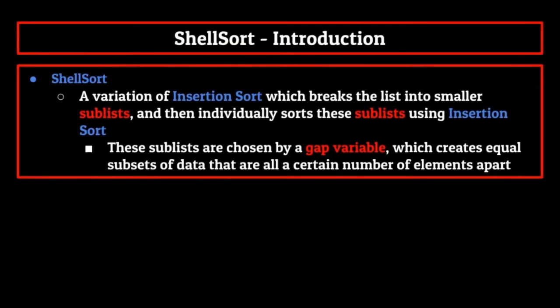We can define shell sort as a variation of insertion sort, which breaks the list down into smaller and smaller sublists, and then individually sorts these sublists using insertion sort. The sublists are chosen by a gap variable, which creates equal subsets of data that are all a certain number of elements apart. This is a semi-difficult concept to wrap your head around, so let's pull up an example.